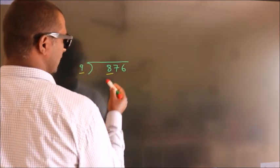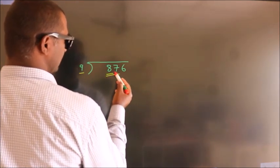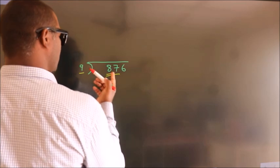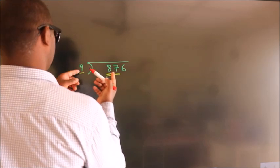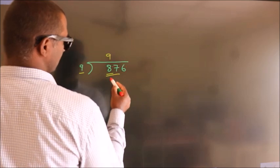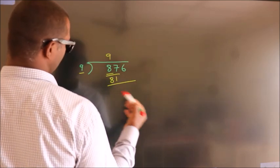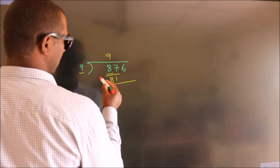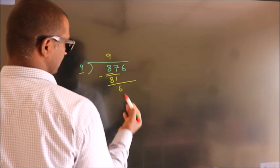So we should take two numbers, 87. A number close to 87 in the 9 table is 9 nines, 81. Now we subtract and get 6.